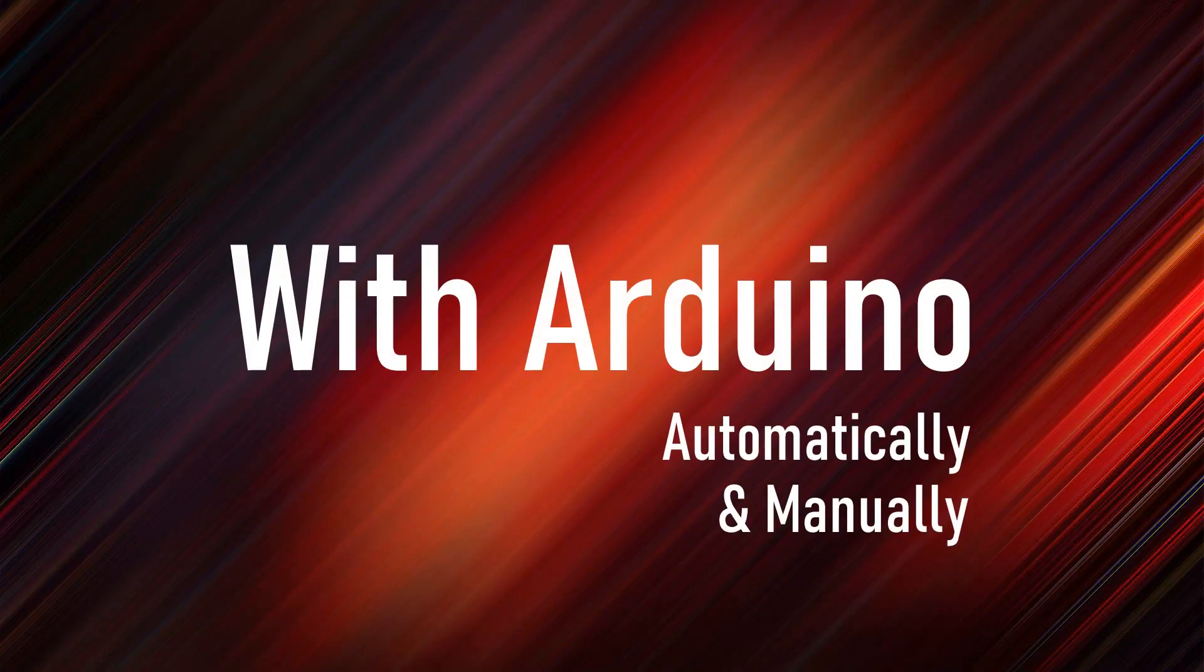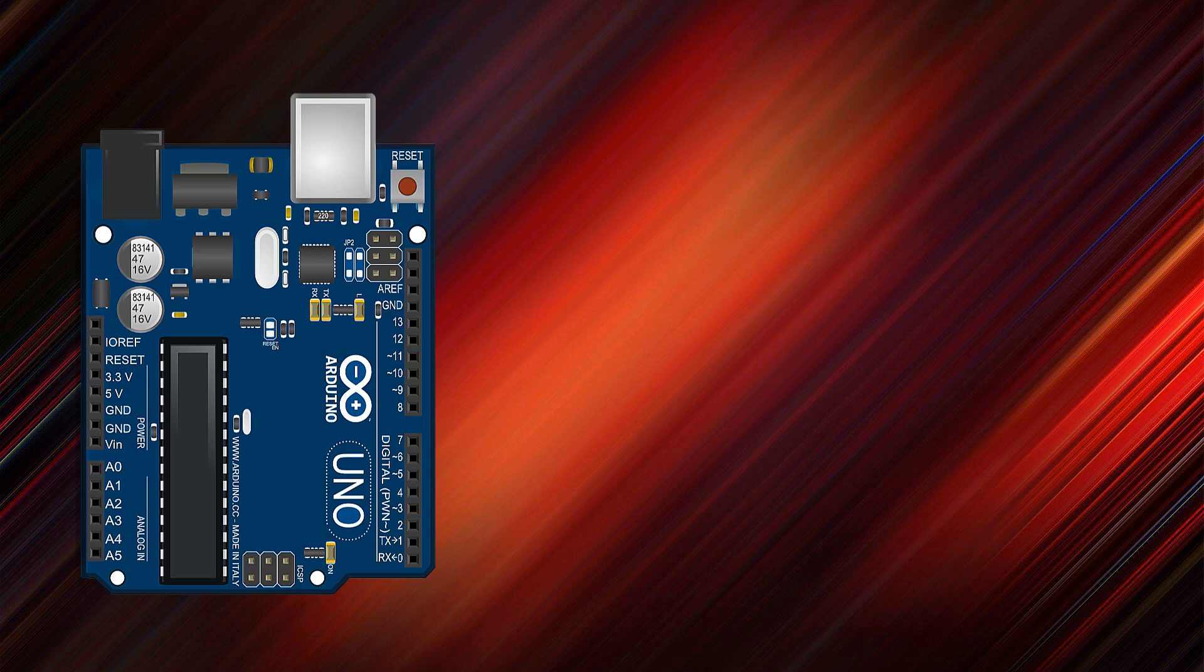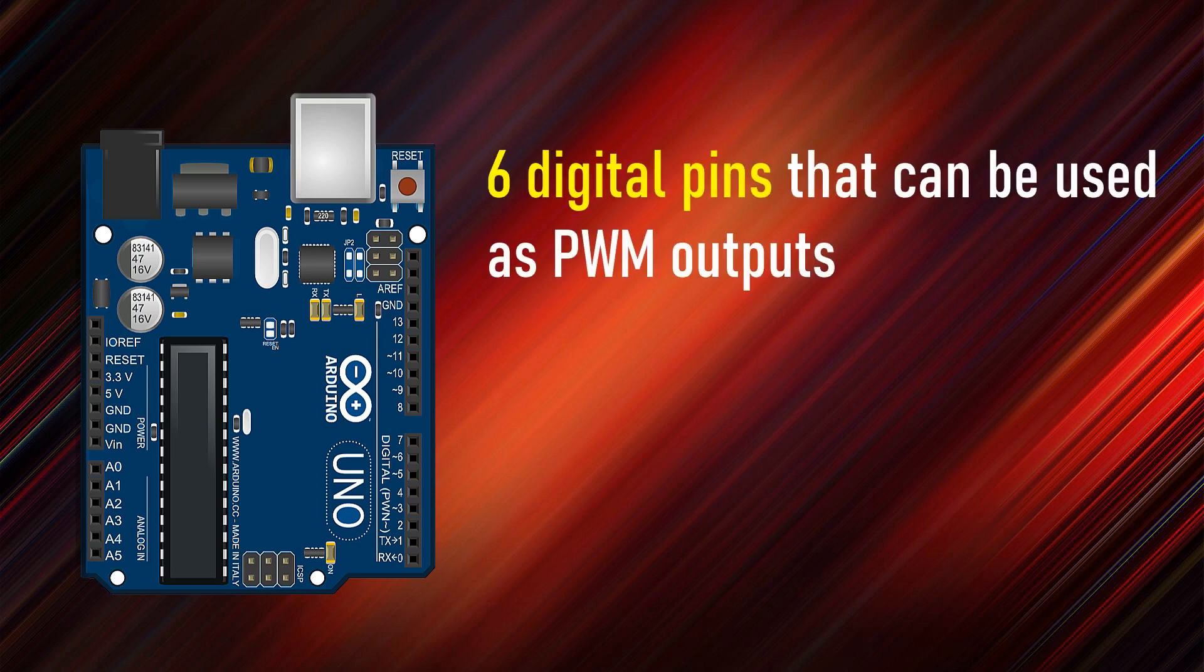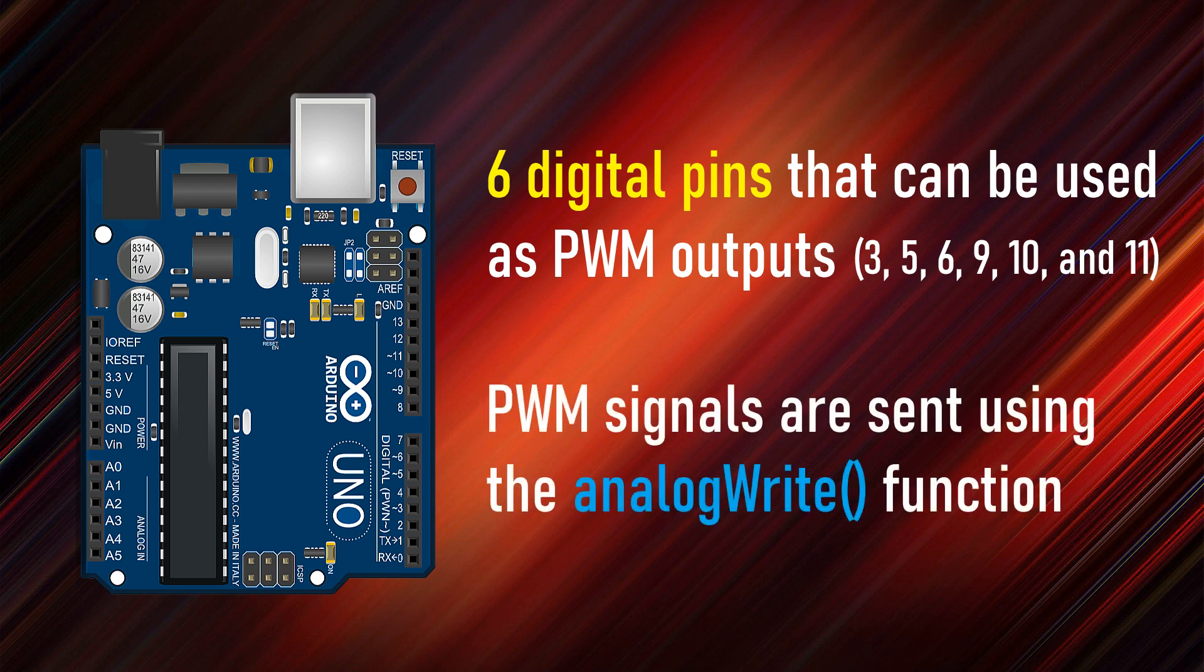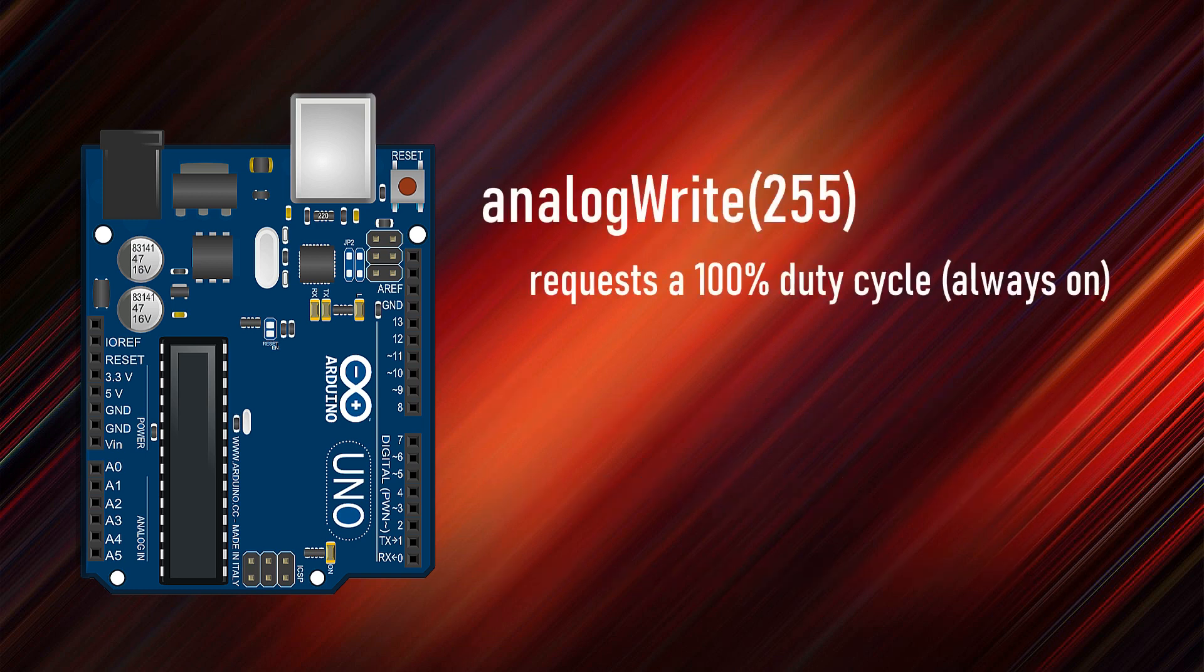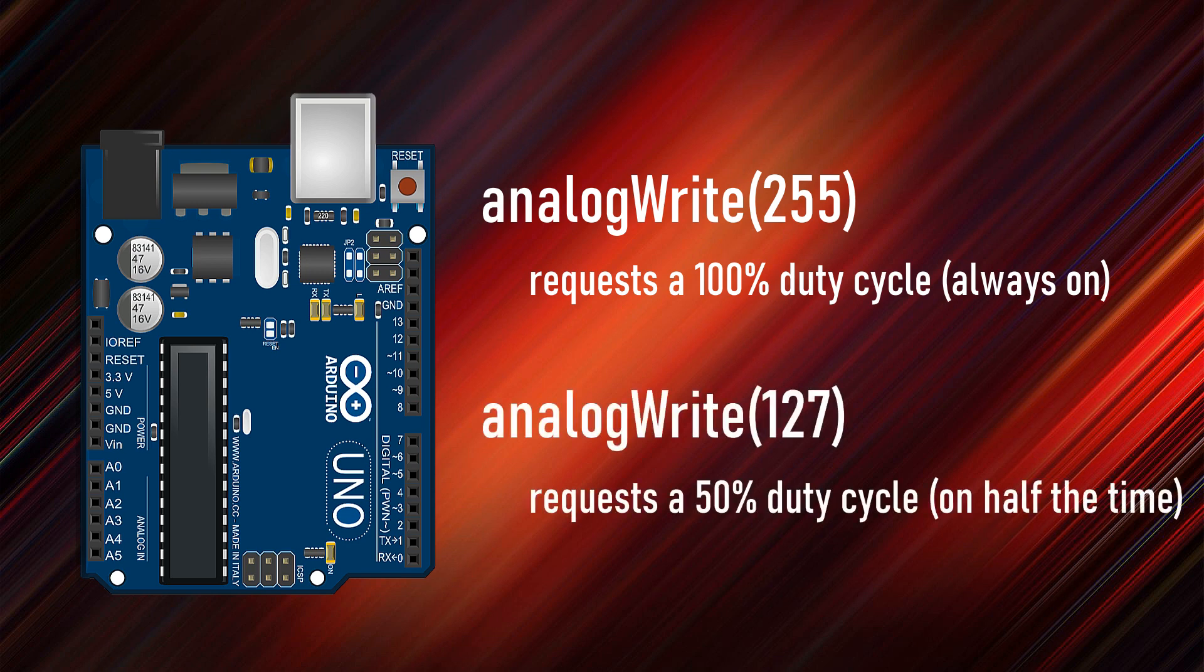Now let's repeat this setup using an Arduino. The beauty of Arduino is that it has 6 digital pins that can be used as PWM outputs: pin number 3, 5, 6, 9, 10, and 11. PWM signals are sent using the analog write function by passing a value between 0 and 255. Analog write 255 requests a 100% duty cycle, which means always on. An analog write 127 is a 50% duty cycle.